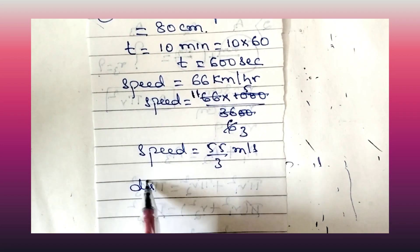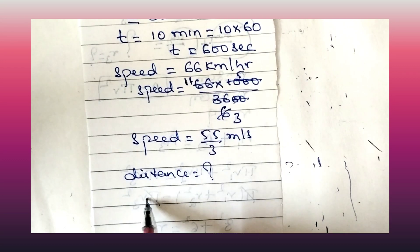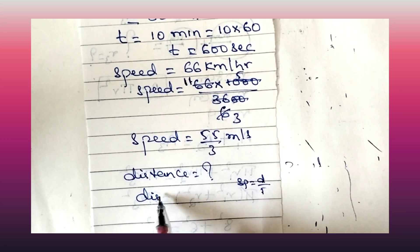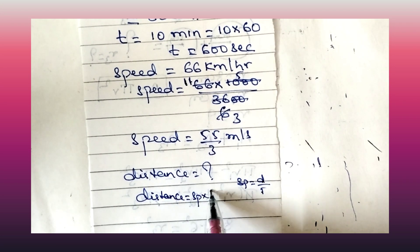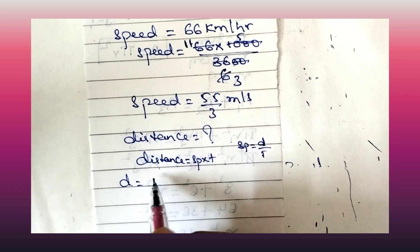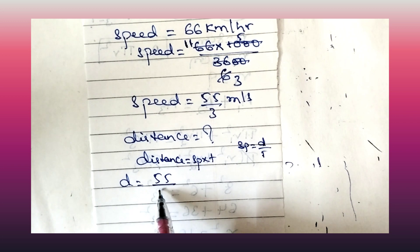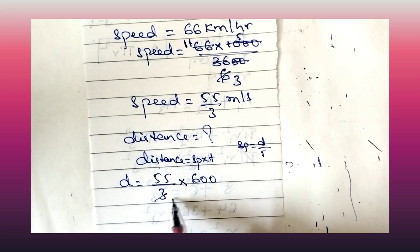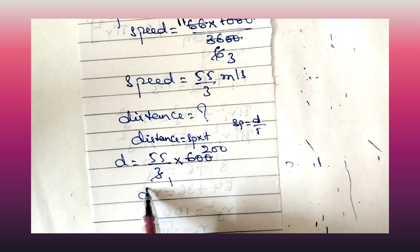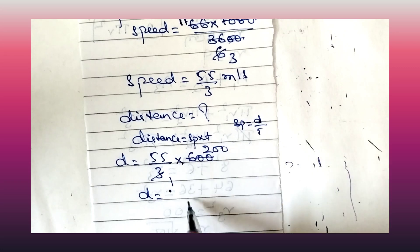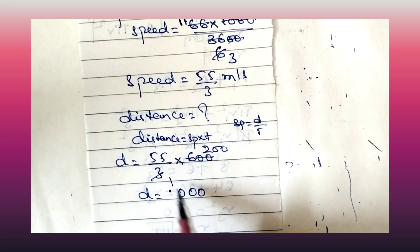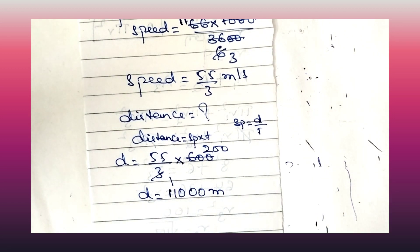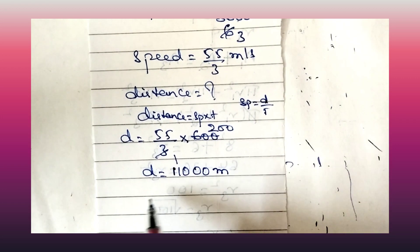Now let us find the distance. Distance = speed × time = (55/3) × 600 = 55 × 200 = 11,000 metres. Converting to centimetres: 11,000 metres = 1,100,000 centimetres.